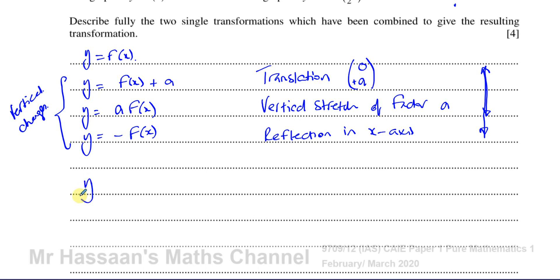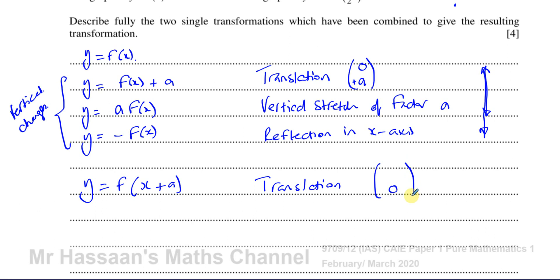When you have something like y equals f of x plus a, where the change is inside the function, the x is being replaced by x plus a. So again it's a translation. However, the y-coordinates are unchanged and the x-coordinates are changed. This is where it's a bit different from what you might think: instead of moving a units to the right, it moves a units to the left.